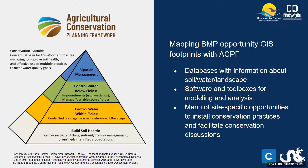Objective 3 is focused on bringing the ACPF — Agricultural Conservation Planning Framework — GIS toolbox, developed by the USDA Agricultural Research Service in the Midwest, to the Chesapeake. This toolbox utilizes geospatial datasets related to soil, water, and landscape to produce conservation practice opportunity data at the parcel scale. We've combined it with the great datasets from Objectives 1 and 2 to scale this resource across the watershed.